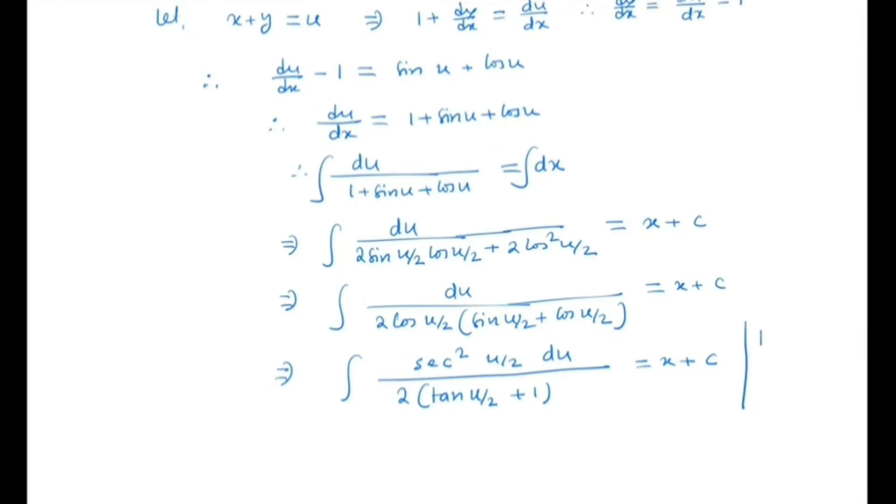So now let tan(u/2) be z. So we get half sec squared(u/2) is equal to dz. So sec squared(u/2) du is equal to 2dz.